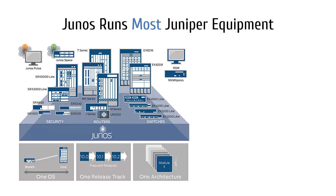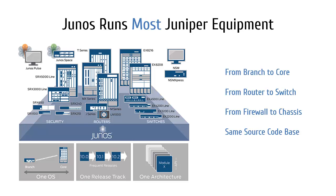You actually have to go to the other company now to get support for those products. But Junos runs devices from the branch to the core of the network, from routers to switches to firewalls. Because Junos is used across the board for most of Juniper's product line, you have a single software release track to keep track of and one architecture to learn. All Junos OS devices share the same base source code, so Junos is really the foundation for learning just about any new Juniper device.